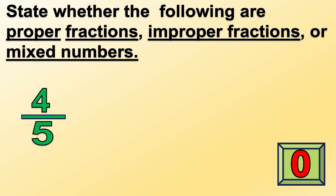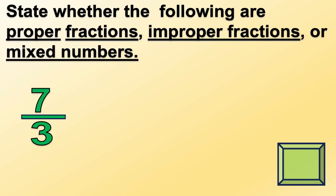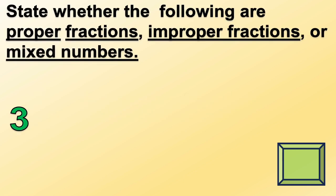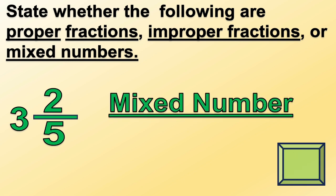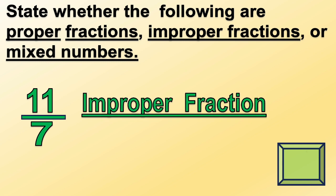Next: seven-thirds. Time's up — seven-thirds is an improper fraction. Three and two-fifths: time's up — the answer is mixed number. Another one: eleven-sevenths. Time's up — the answer is improper fraction.